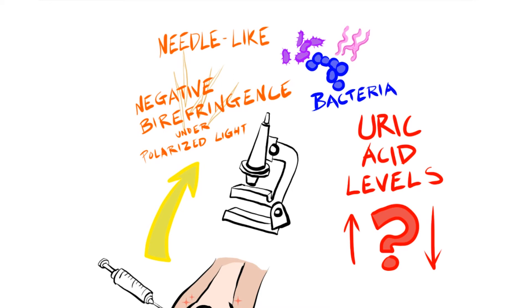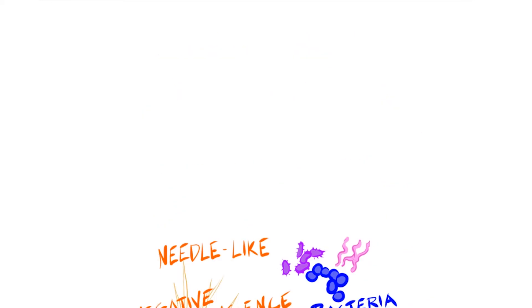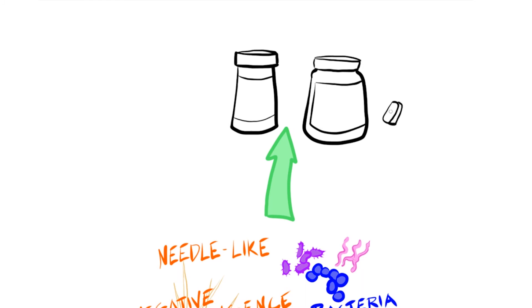Acute episodes of gout are treated with non-steroidal anti-inflammatory drugs. Many different NSAIDs have been used to treat gout including ibuprofen and indomethacin. Steroids such as prednisone are also used for their anti-inflammatory effect. They can be taken orally or injected into the joint.